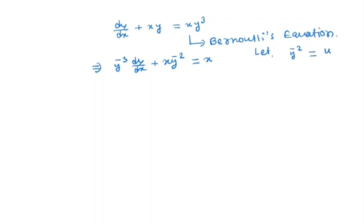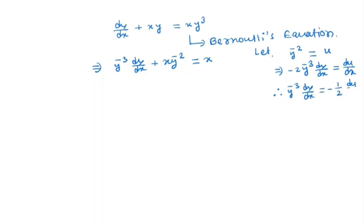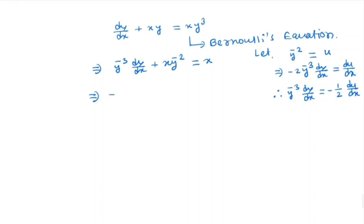With u = y⁻², differentiating gives minus 2 · y to the power minus 3 · dy/dx equals du/dx, so y to the power minus 3 · dy/dx equals minus one-half · du/dx. Substituting, we get minus one-half · du/dx plus x·u is equal to x.